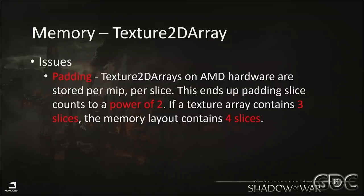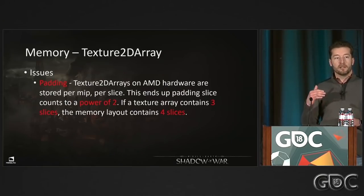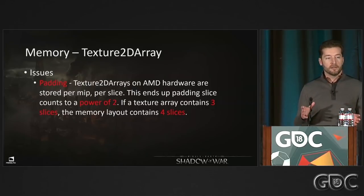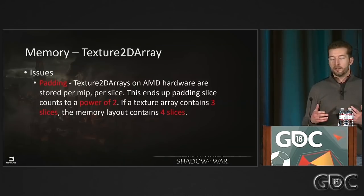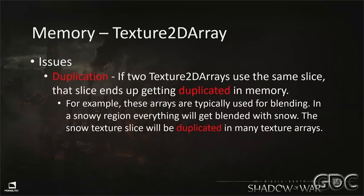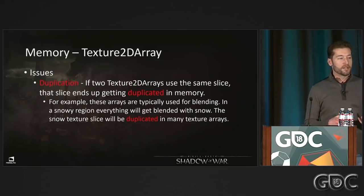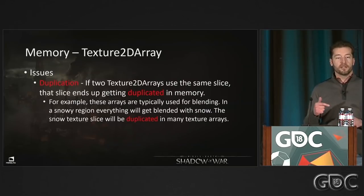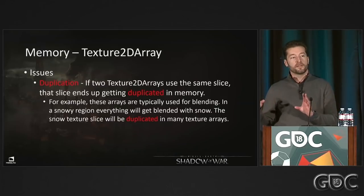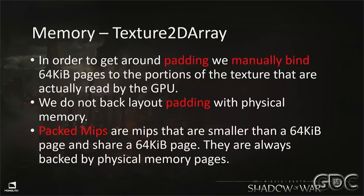However, Texture 2D arrays have issues. The first is padding: on the AMD hardware in the consoles, the slice count is always padded to a power of two. If you request a 3-slice array you get 4; if you request 17 slices, you get 32 and pay for all 32. The second issue is duplication: since we use arrays for blending, in our snow level every artist creating a Texture 2D array includes that same snow slice, so the same snow texture data ends up duplicated in every single Texture 2D array at cook time.